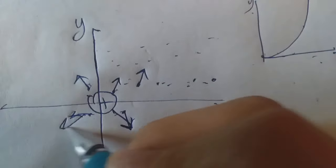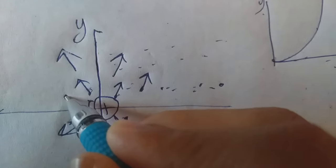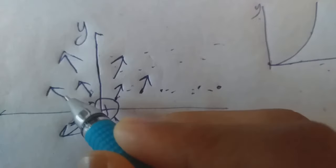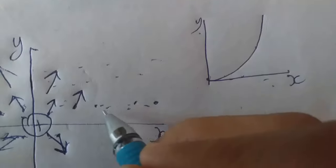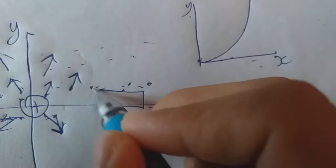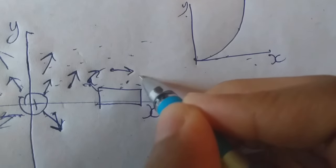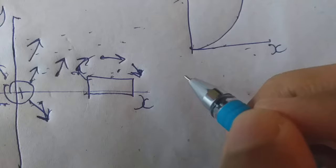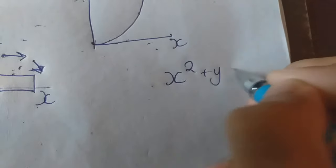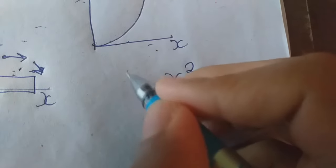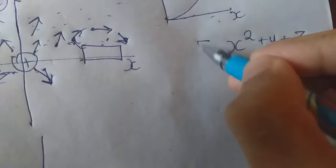We have a vector and the main point. Then we have a vector. Then we have a function to denote this function. We have x² plus y plus z. Then we have a vector function.